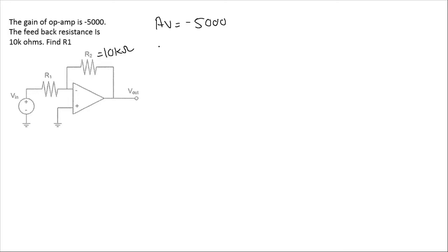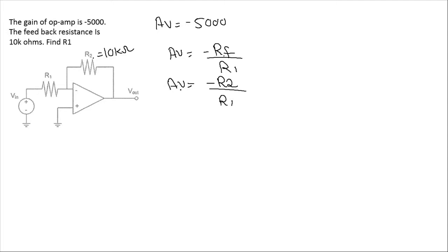We know that the voltage gain for an inverting amplifier is equal to minus Rf divided by R1. In this case Rf is R2, so Av equals minus R2 divided by R1. The voltage gain Av is given as minus 5000, and R2 or Rf is 10k ohm, so we write minus 5000 equals minus 10k ohm divided by R1.